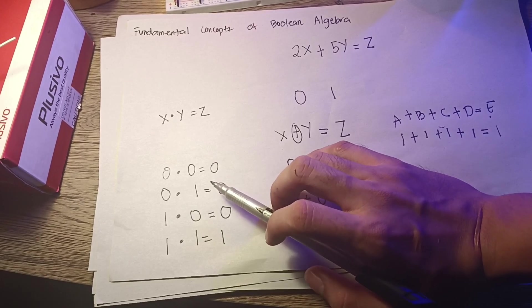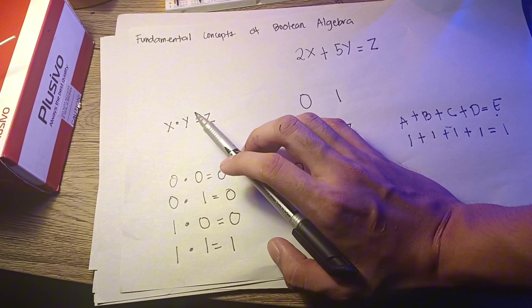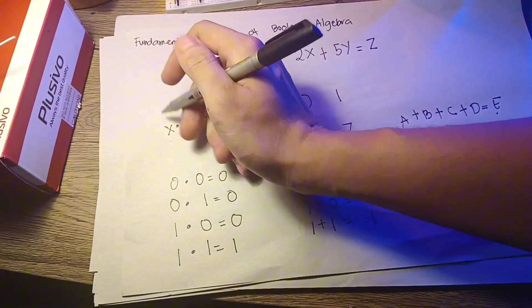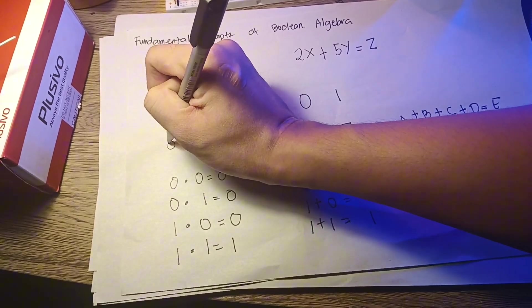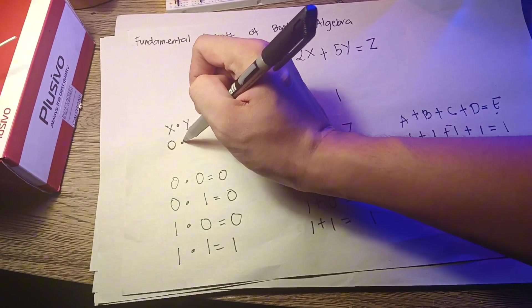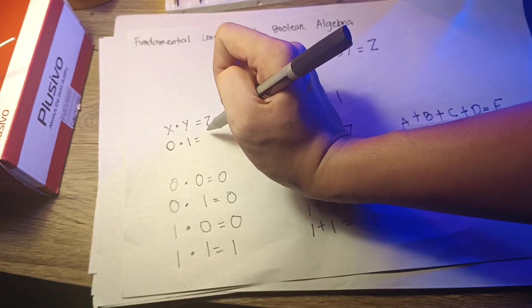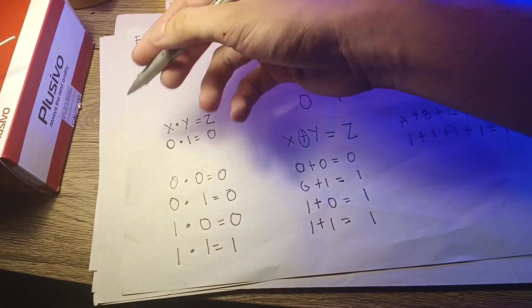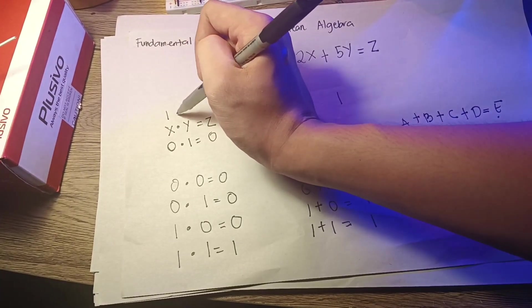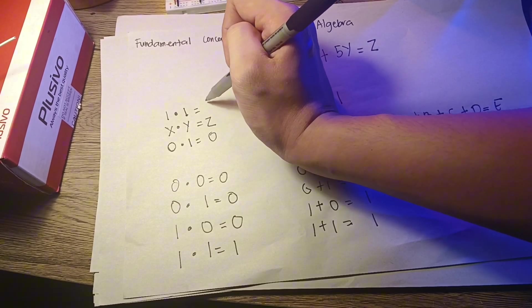Thus, for instance, if we write x times y equals z and find that x is 0 and y is 1, then z will become 0. Only when x and y are both 1 will z be a 1.